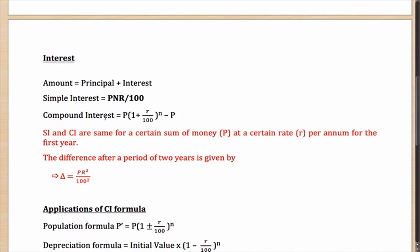Whereas compound interest is calculated by a slightly more complicated formula: P into 1 plus R by 100 to the power N minus P. It is also very important to understand why it happens this way.